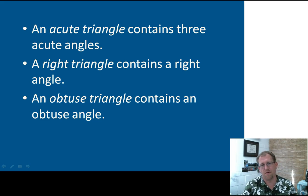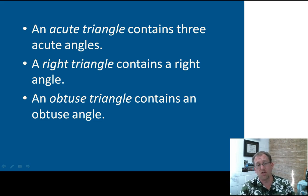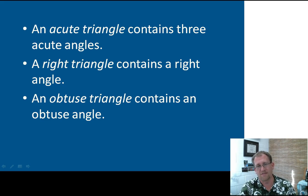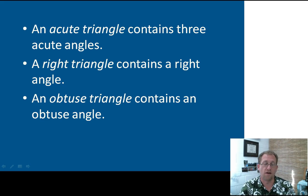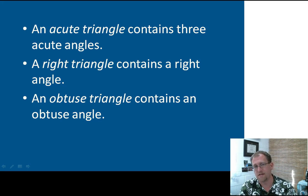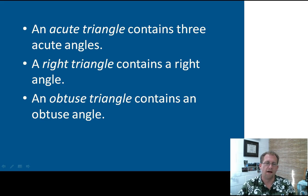The first three definitions have to do with naming a triangle based on the measure of its angles. If all the angles of a triangle are less than 90 degrees, then we call it an acute triangle — not 'a cute triangle' as opposed to others that are ugly, but an acute triangle, which means all of the angles are less than 90 degrees. A right triangle has one 90 degree angle. An obtuse triangle has at least one angle greater than 90 degrees. So: acute, right, and obtuse.